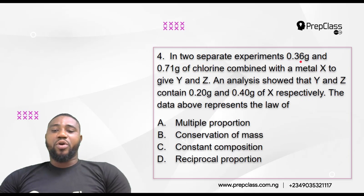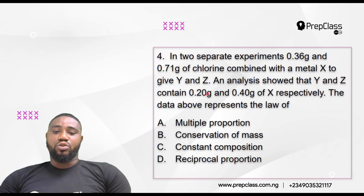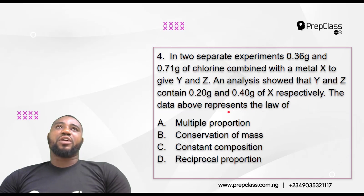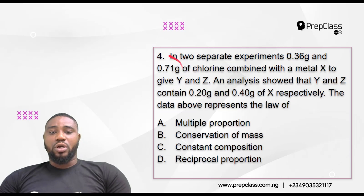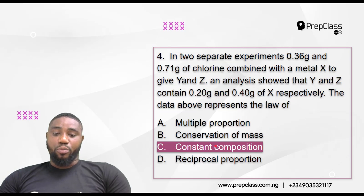Question four: in two separate experiments, 0.36 gram and 0.7 gram of chlorine combined with metal X to give compounds Y and Z. Analysis shows Y and Z contain 2.20 gram and 0.40 gram of X respectively. This represents the law that states a pure chemical compound contains elements combined in the same proportion by mass. Dividing the values confirms a ratio of 2:2, the same proportion by mass. The answer is the law of constant composition.